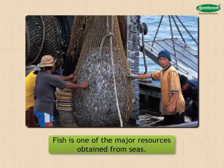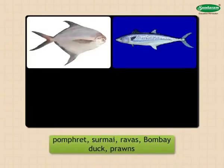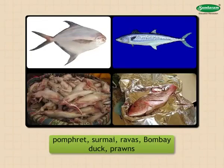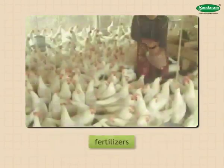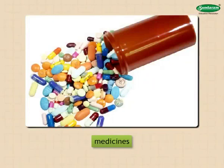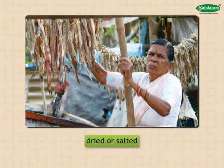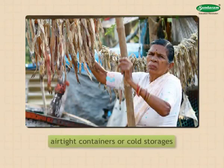Fishing is carried out in the coastal areas. Fish is one of the major resources obtained from seas, and our state leads in marine fishing. We obtain pomfret, surmay, ravas, Bombay duck, prawns, etc. from the sea. Besides being a food item, they are useful as fertilizers and in the production of poultry feed and medicines. Aquatic life forms like fish and prawns are perishable; these are dried or salted in order to preserve them, and are also stored in airtight containers or cold storages.